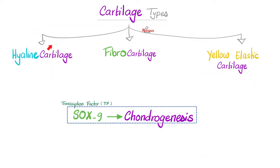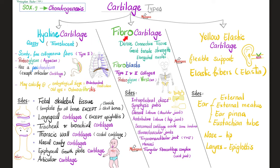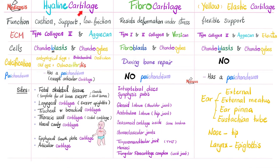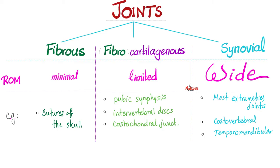Types of cartilages: hyaline cartilage, fibrocartilage, and yellow or elastic cartilage. Don't forget SOX-9. We talked about the different types of cartilages in previous videos. Just remember that the cartilages at the articular surface are hyaline cartilage — glassy and translucent. Who makes cartilages? Chondroblasts. How about who makes bones? Osteoblasts.